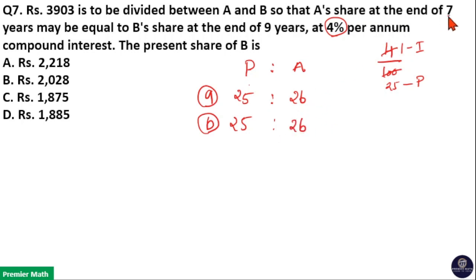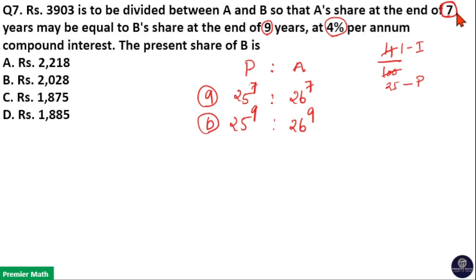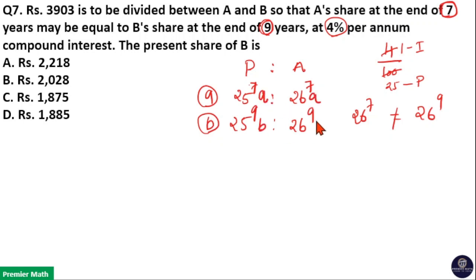The number of years for A is 7 years, so 25^7 parts is the principle of A and 26^7 parts is the amount for A. The number of years for B is 9 years, so 25^9 parts is the principle of B and 26^9 parts is the amount for B. Since the amount at end of 7 years equals the amount at end of 9 years: 26^7 × A = 26^9 × B.